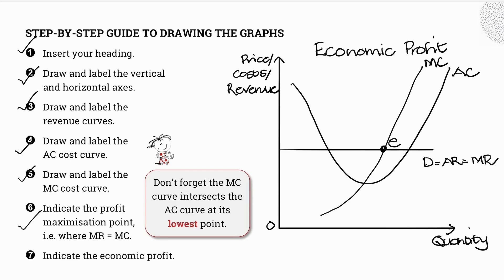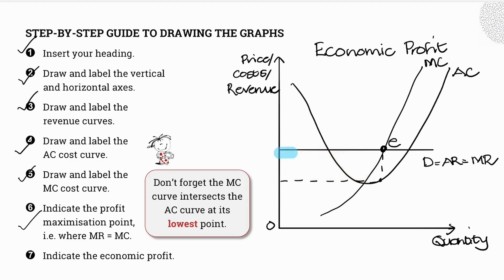The next thing I'm going to do is indicate my economic profit. From the equilibrium point E, I take a line down to the average cost curve, then across — and this area, grade 12s, is my economic profit. I'm going to shade it in for you. This shaded area here is my economic profit. The last thing I'm going to do is illustrate my quantities and my price.